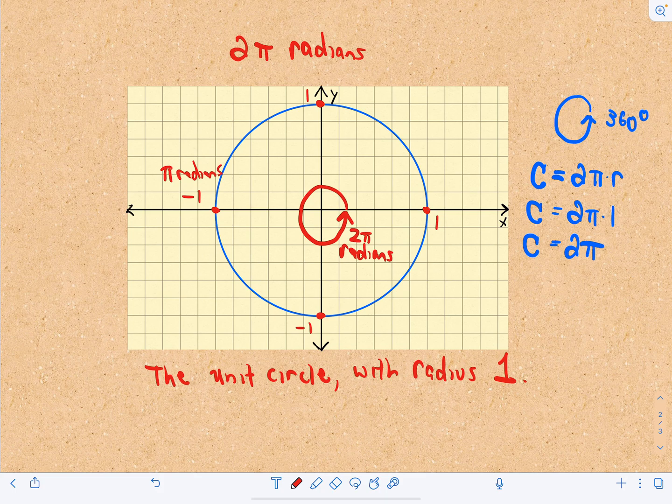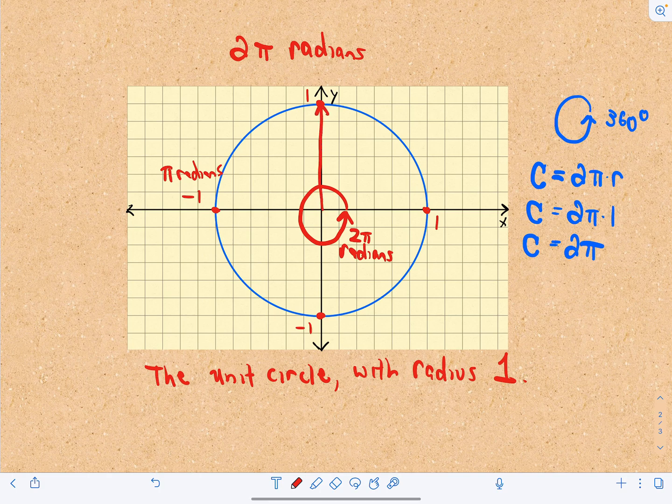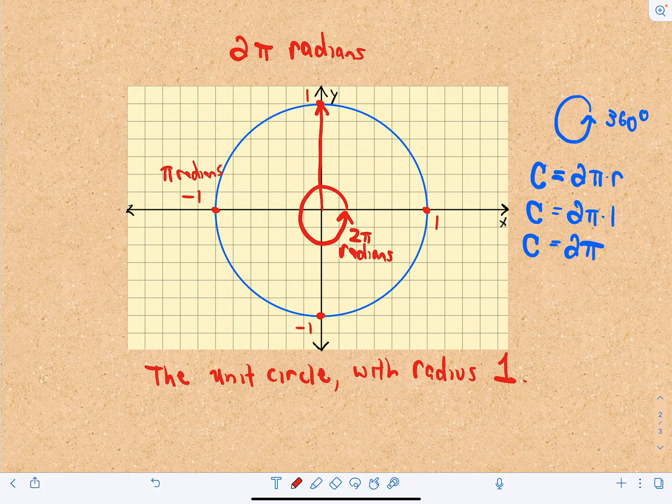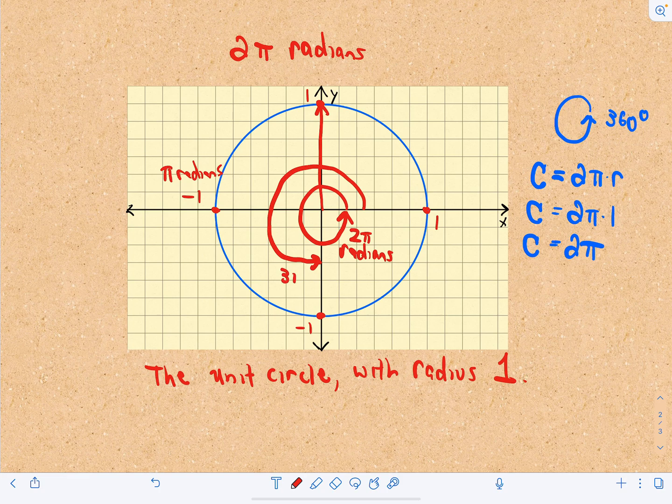So, pi radians would put you at the negative x-axis. Pi over 2 radians, that's going to put you at the positive y-axis. And similarly, if we go to the negative y-axis, that's going to be 3 pi over 2 radians.